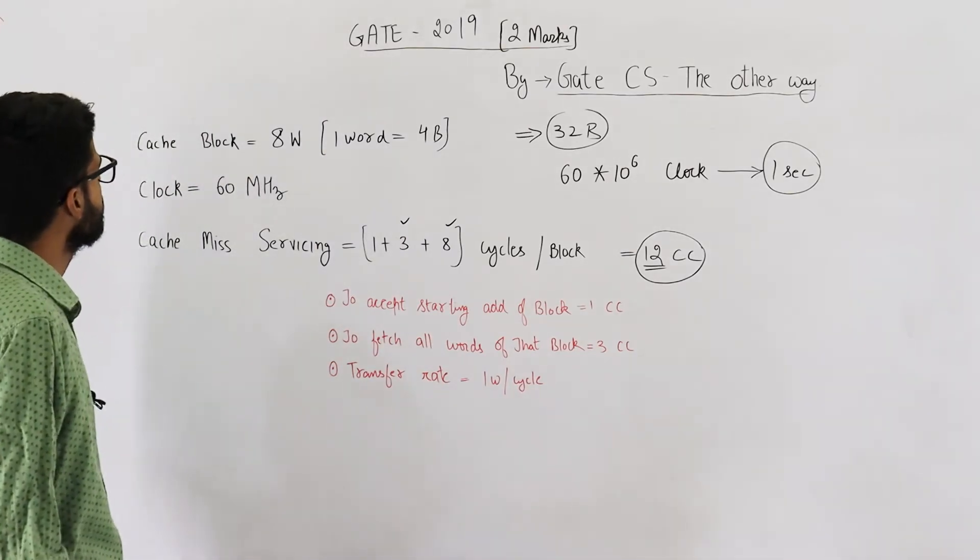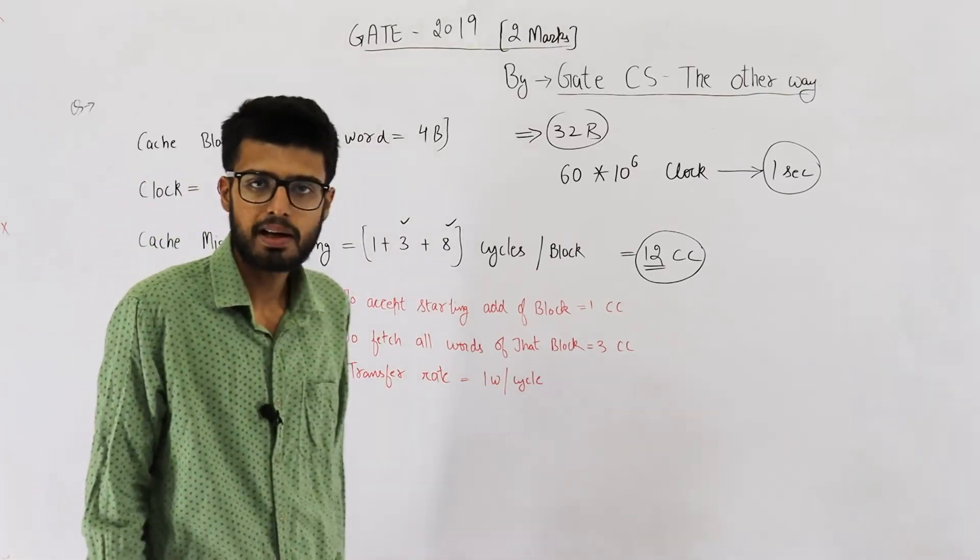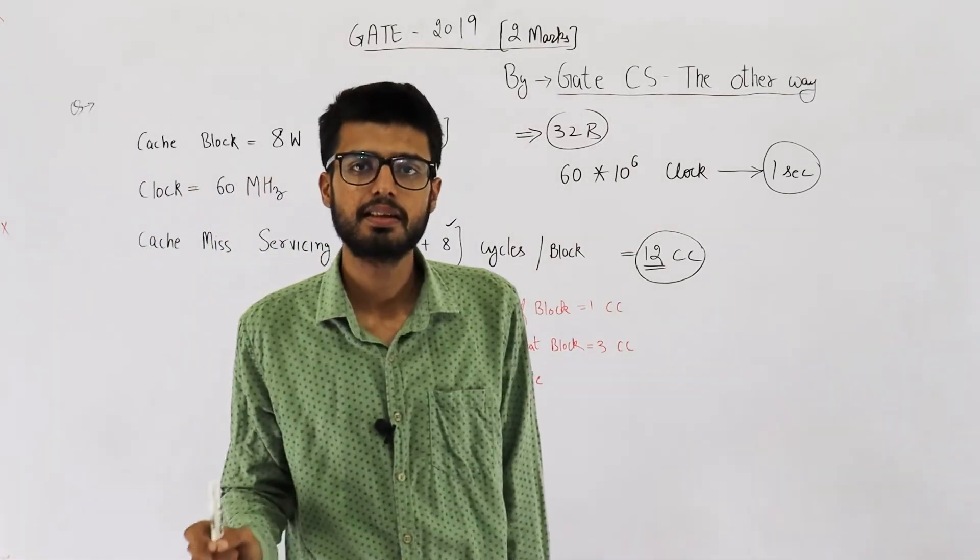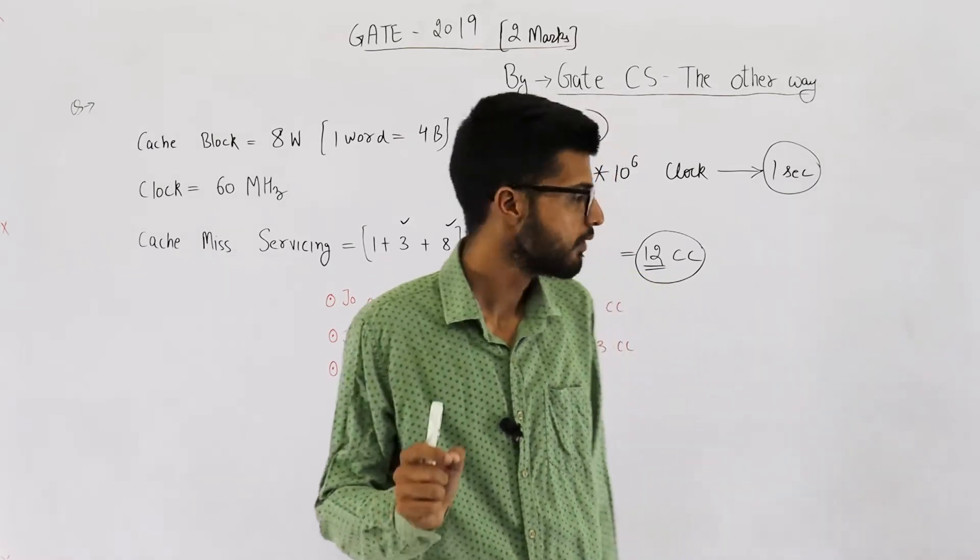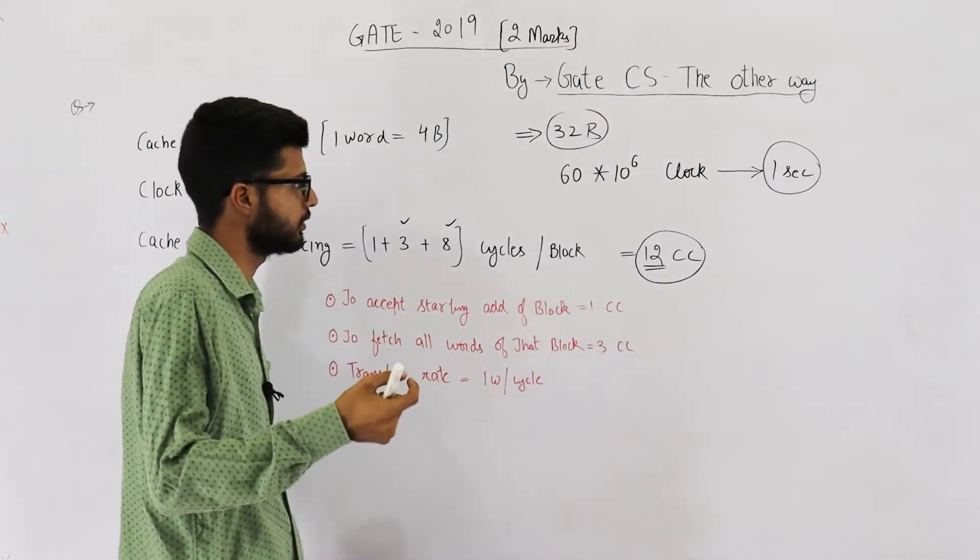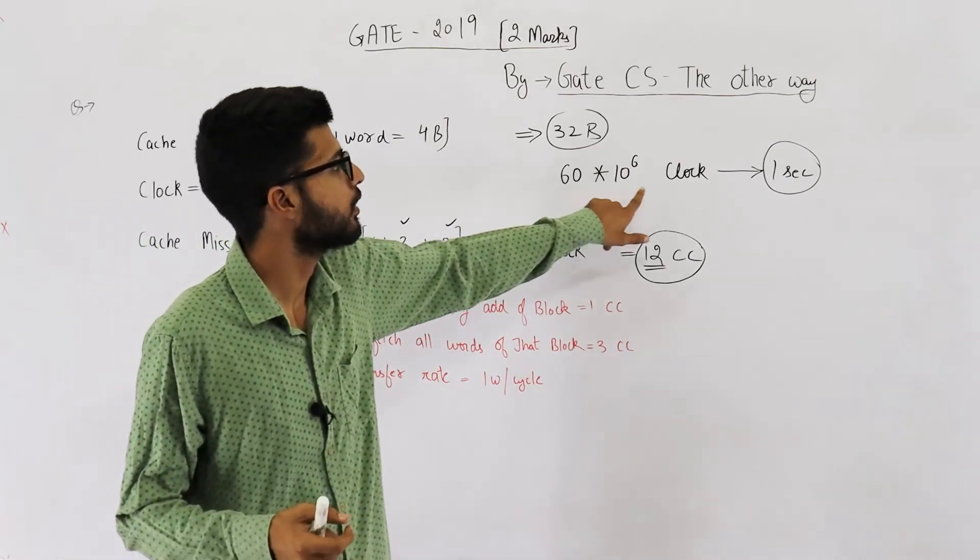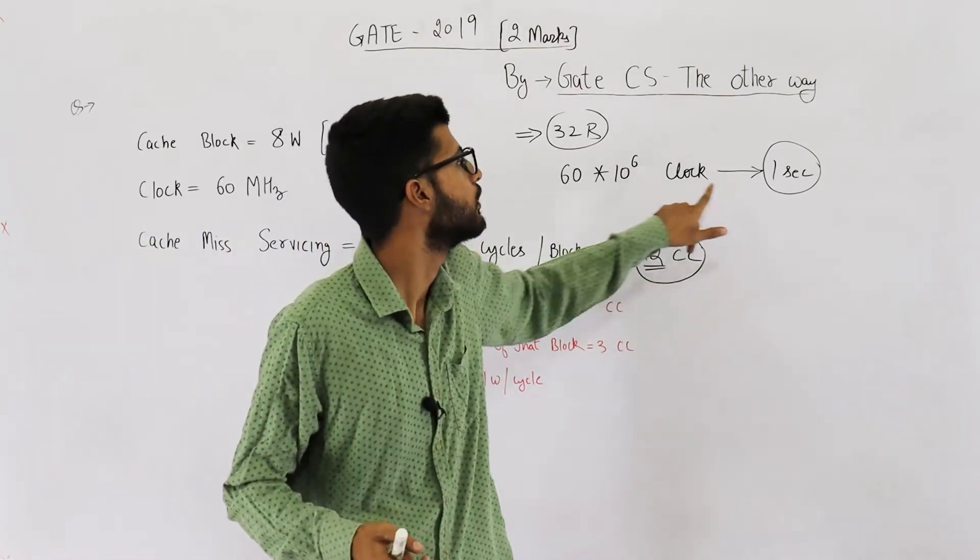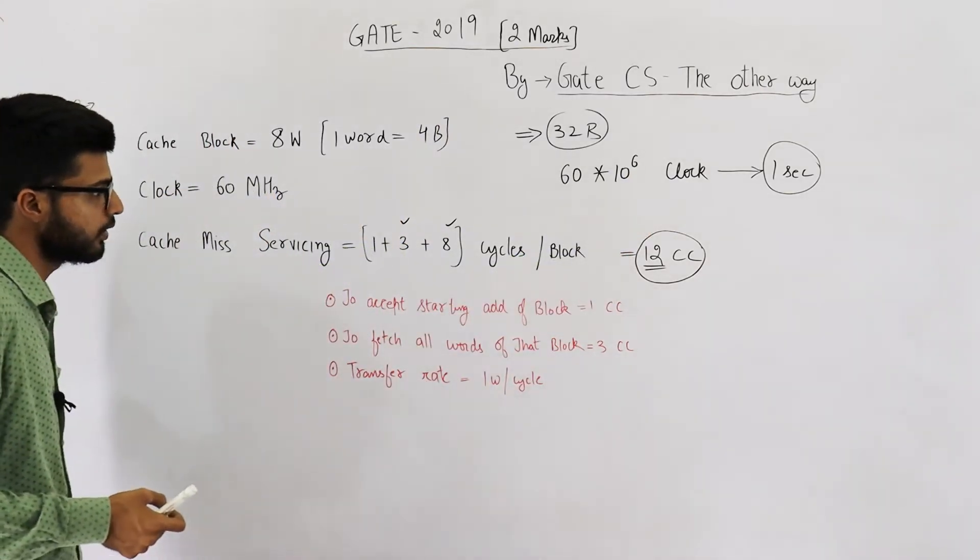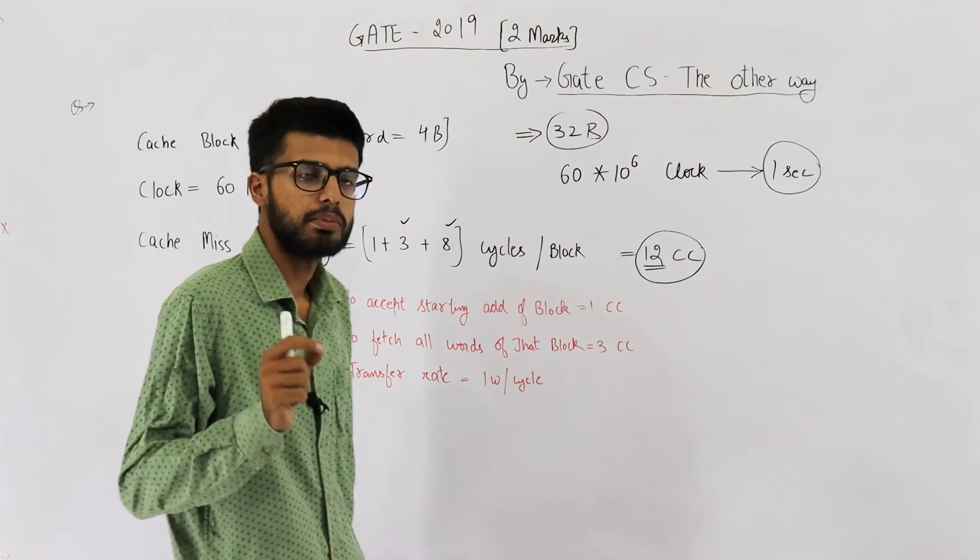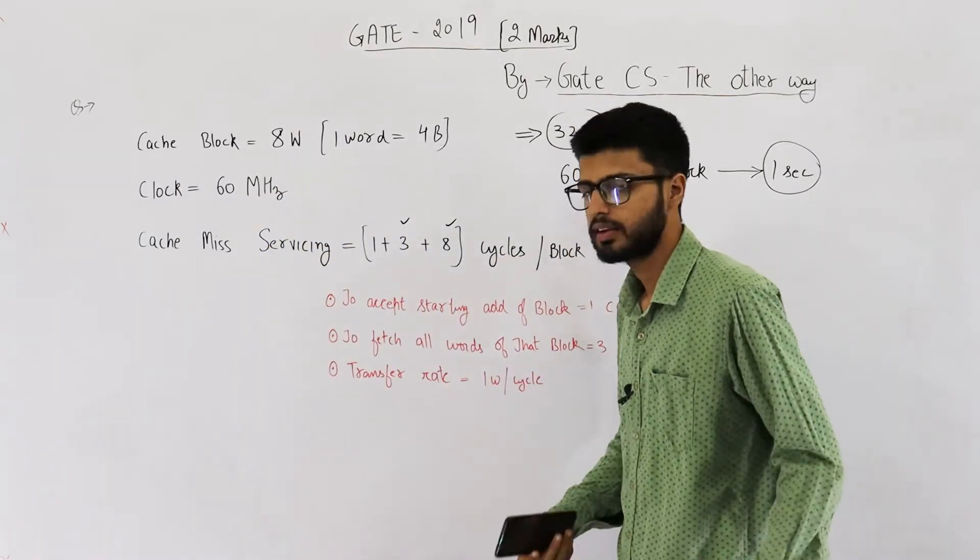Moving ahead, they are saying, clock runs at 60 megahertz. 60 megahertz means 60 mega clocks are generated in one second. Because hertz means times per second. So, 60 mega clocks are generated in one second. Mega is 10 raised to the power of six. Now, let's start the question. But before that, let me just highlight this point.